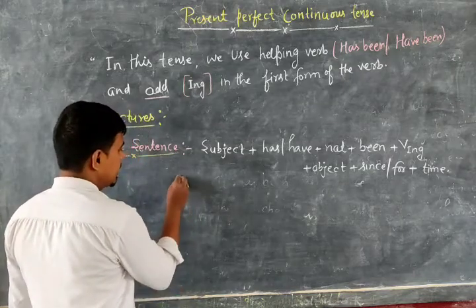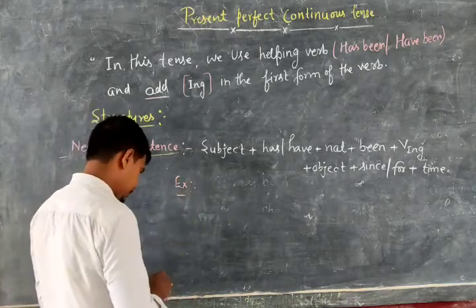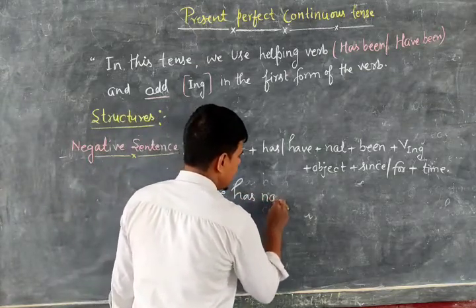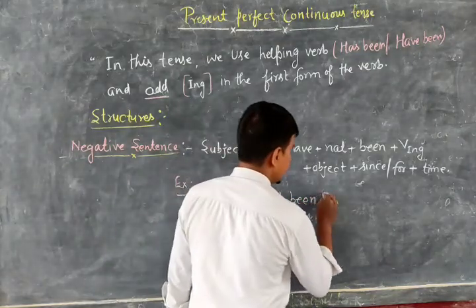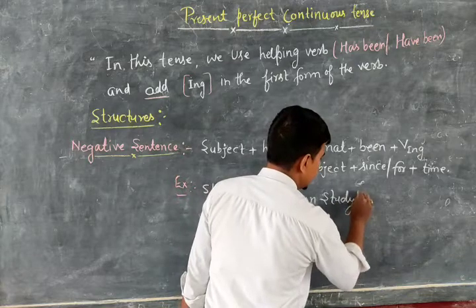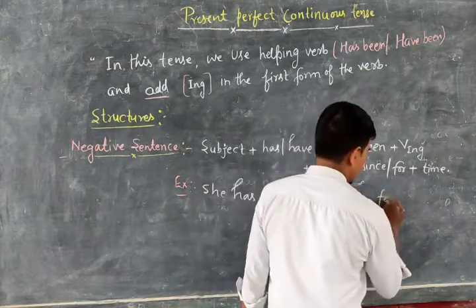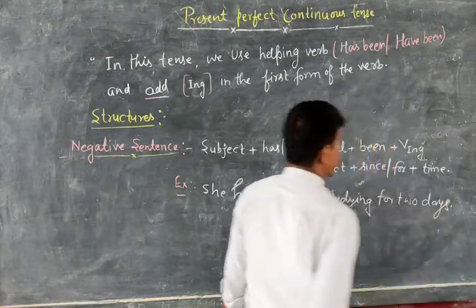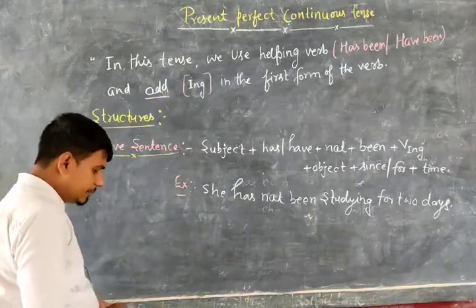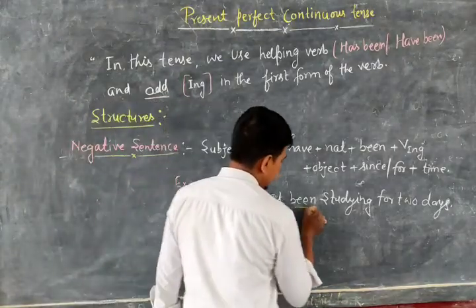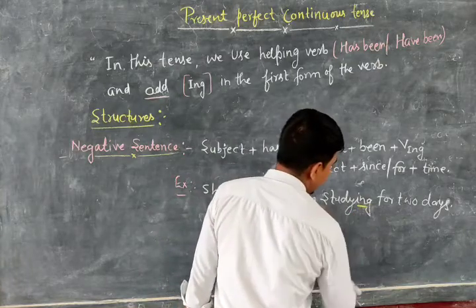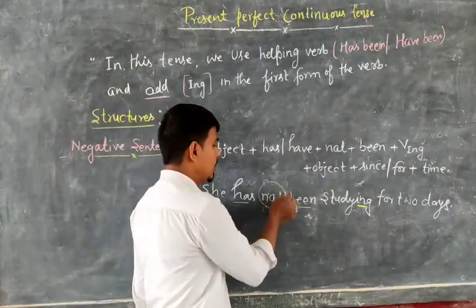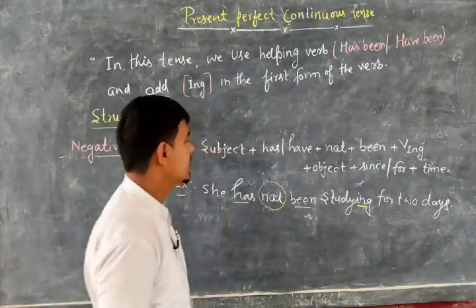You can see this example: 'She has not been studying for two days.' So the helping verb 'has been' plus 'not' plus 'studying' — the '-ing' form of the verb — tells us that this is the present perfect continuous tense, and 'not' makes it the negative sentence.